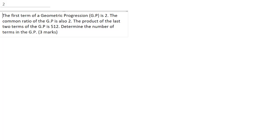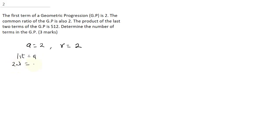This question is 3 marks. The first term is 2 and the common ratio is also 2. You need to know that the first term is A, the second term is AR, the third term is AR squared, the fourth term is AR cubed, and going to the end term, it is AR to the power N minus 1.